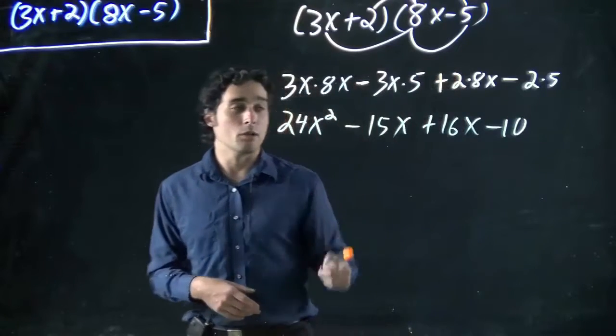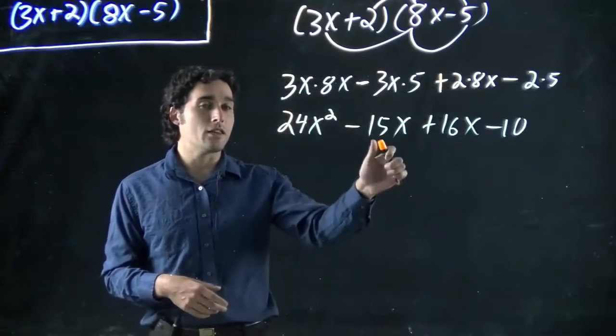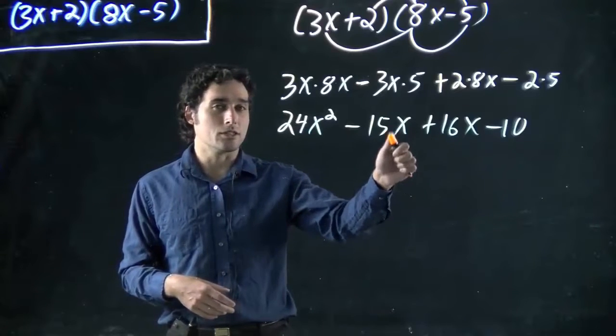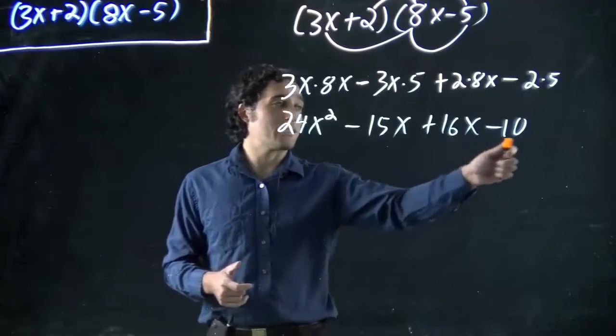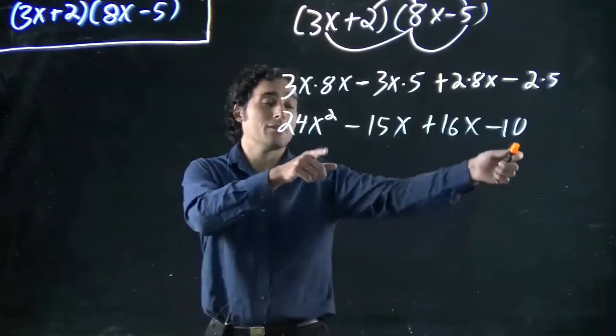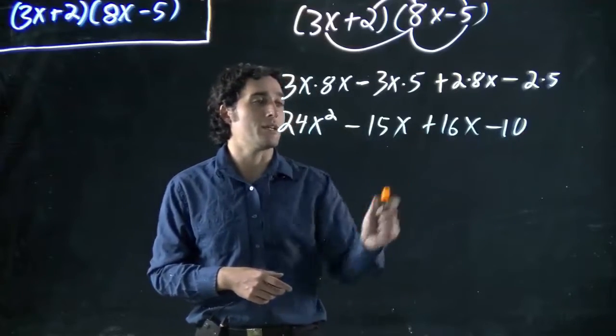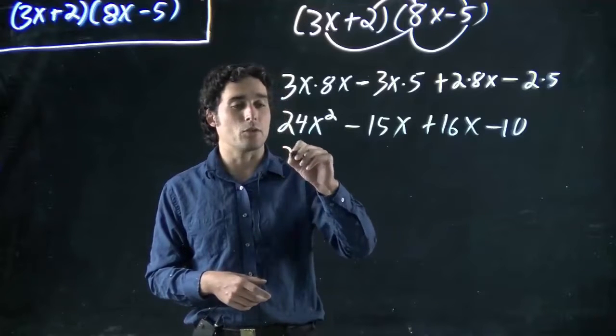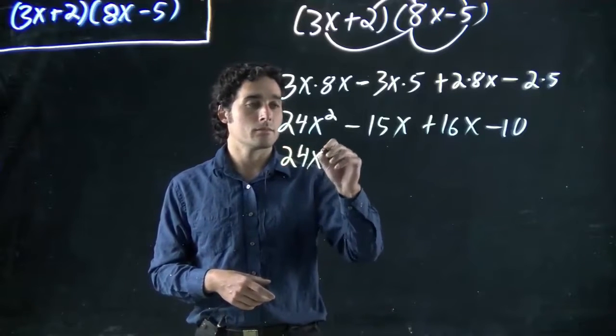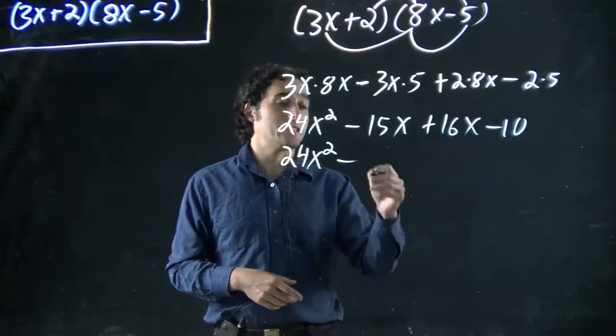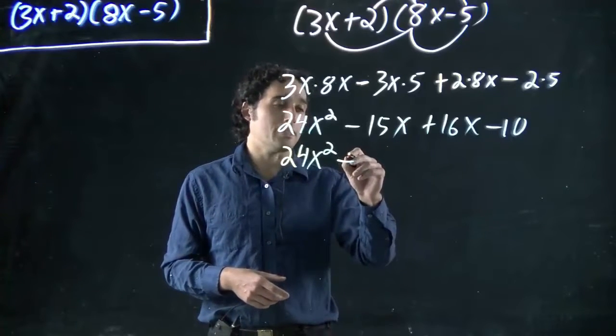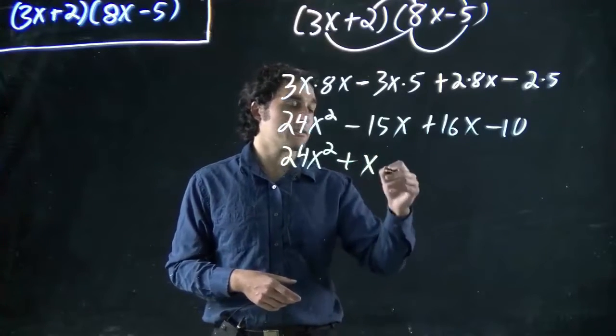Combine the terms we can. What terms can we combine? Only those with the same variable to the same power. So x squared, x can't be combined. x and 10 can't be combined. These two can't be combined. Only these two can, the middle two, because they both have x to the power of 1. So minus 15 plus 16 is actually just 1, and it's plus 1. So 24x squared plus x minus 10.